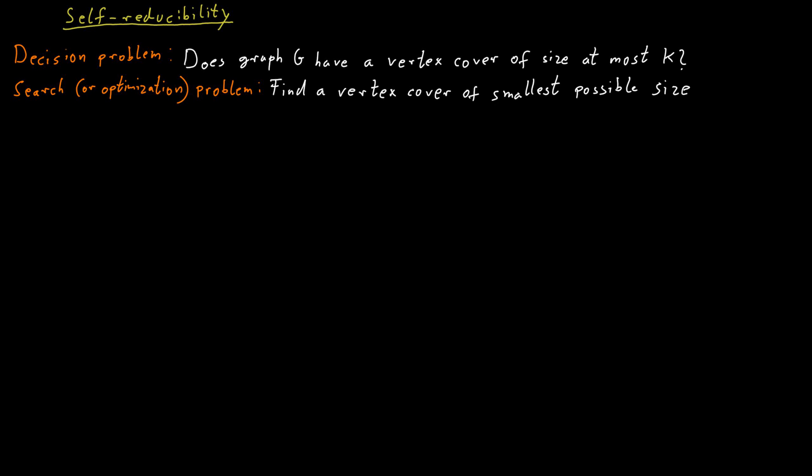To be specific, remember we had Cook reductions, and Cook reductions somehow were able to deal with problems that are not decision problems. So we could reduce some problem x to a problem y, and x didn't necessarily have to be a decision problem. This is not true for Karp reductions, but for Cook reductions, x doesn't need to be a decision problem.